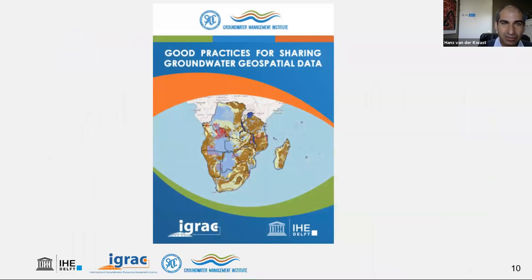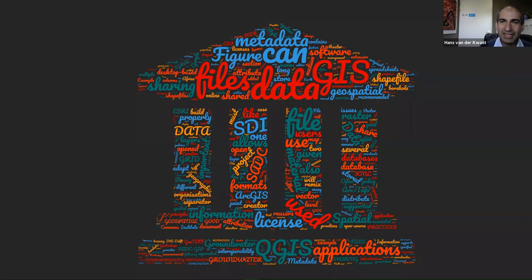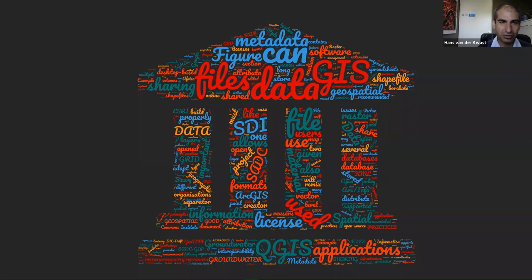A good practices document for sharing groundwater geospatial data was developed during this project, and this presentation is a summary with illustrations of that document. When working with GIS, spatial data, and SDI, many terms come up — files, databases, styles, layers, rasters, vectors, open data, licenses, different software — as shown in a word cloud. There's a lot of confusion and misinformation if you don't know what you're talking about, so this presentation aims to clarify things about data files and software.